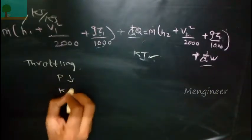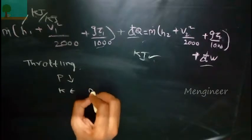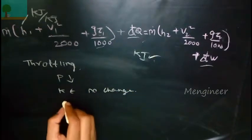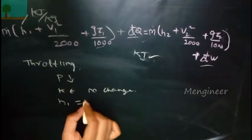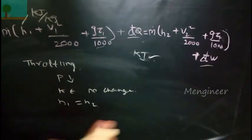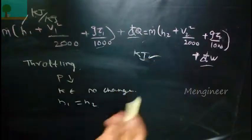For throttling process, the pressure will be low. The throttling process is used to reduce the pressure - it's an expansion. The enthalpy will be maintained constant. So for throttling process, h1 and h2 will be equal.